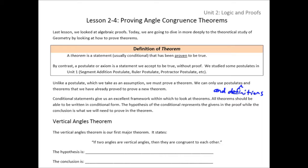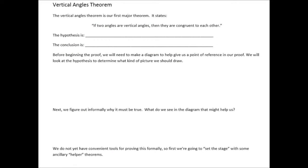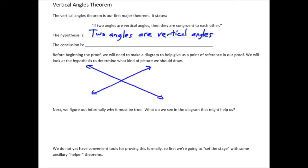One of our major goals in this lesson is to prove the vertical angles theorem. It states that if two angles are vertical angles, then they are congruent to each other. The hypothesis is that two angles are vertical angles — this represents our starting point, our given information. Here are a pair of vertical angles. We'll use this as given information, as a reference for our proof. What we're going to try to prove is the conclusion of this theorem: these angles are congruent to each other.